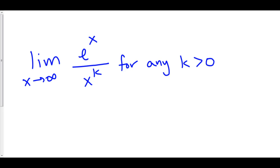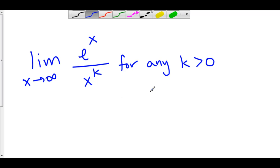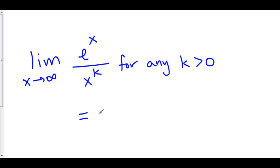Here's the limit as x goes to infinity of e to the x over x to the k, for any positive value of k. Now, k has to be a finite value — it can't be infinity. It could be huge like a thousand, a million, a googol, but it has to be some number. This one diverges. The reason is because as x gets really, really big, e to the x at some point — far off in the future — is going to get massively huge, much, much bigger than x to the k. And because we're going off to infinity, your numerator is blowing up at a much, much faster rate than your denominator. So this actually diverges off to infinity.